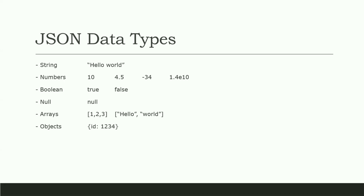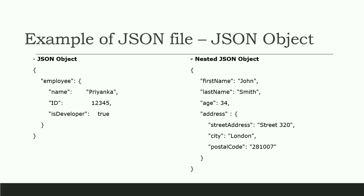So let's dive into the example of a JSON file. A JSON file can be created using objects and arrays. Curly braces represent a JSON object. A JSON object contains data in the form of key-value pairs. The keys are strings and the values are of JSON types we have seen — string, number, Boolean, object, and array. Keys and values are separated by a colon, and each key-value pair is separated by a comma. A JSON object can also have another object inside it, and we call that a nested JSON object.